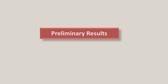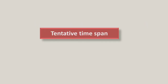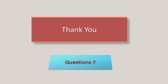In the next slide we have preliminary results. If you have concluded any results, you display them here. We have not concluded any results yet and are still working on data collection — if you have results or conclusions you can write them in this slide. Next we have the tentative time span, where you divide your project into different phases with expected durations: proposal — 7 days, literature review — 10 days, simulation — 15 days, collect materials — 10 days, experimental work — 13 days, conclusion and discussion — 8 days.